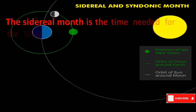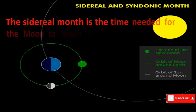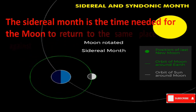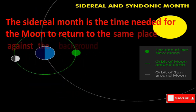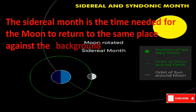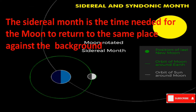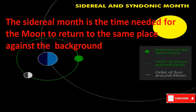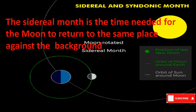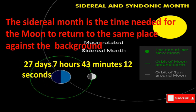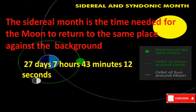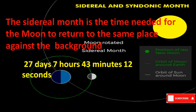The sidereal month is the time needed for the moon to return to the same place against the background of stars, or the time needed to complete one revolution around the earth by the moon. It is about 27 days, 7 hours, 43 minutes and 12 seconds.